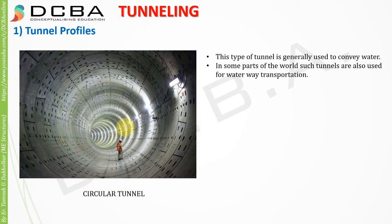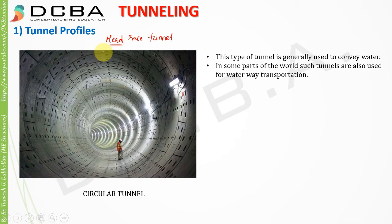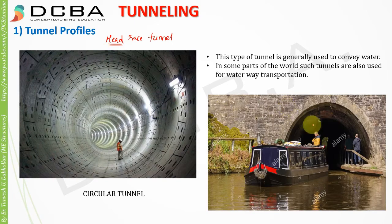Circular tunnels are generally used for transporting water from a dam to places where it is required, or from the dam to the turbines where electricity is generated. Such tunnels are called head race tunnels. The word 'head' comes from the fact that these tunnels are responsible for providing the required head for the turbines to spin and generate electricity.